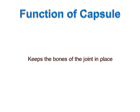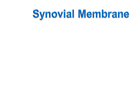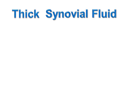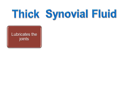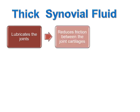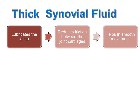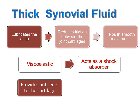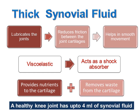The capsule keeps the bones of the joint in place. The synovial membrane is very thin — about 50 microns, approximately the width of a human hair — and produces synovial fluid. Synovial fluid is the thick fluid that lubricates the joints, reducing friction between the cartilages of the joint, and thus helps in smooth movement. Synovial fluid is viscoelastic and therefore also acts as a shock absorber. In addition, synovial fluid provides nutrients to the cartilage and removes waste from the cartilage. A healthy knee joint has up to 4 ml of synovial fluid.